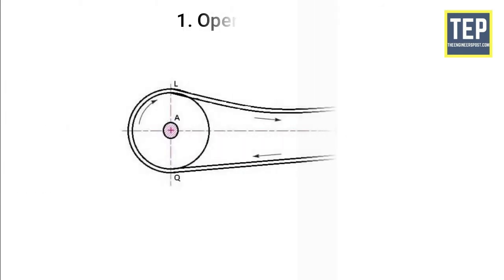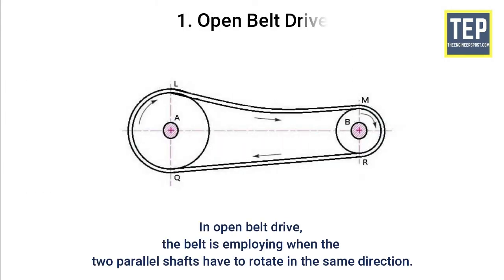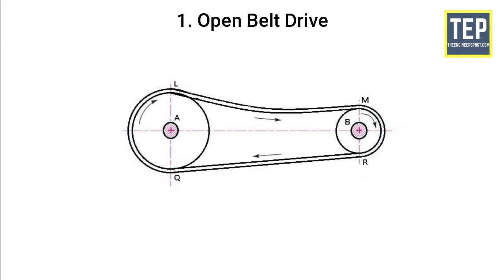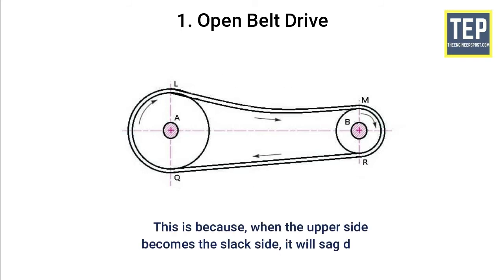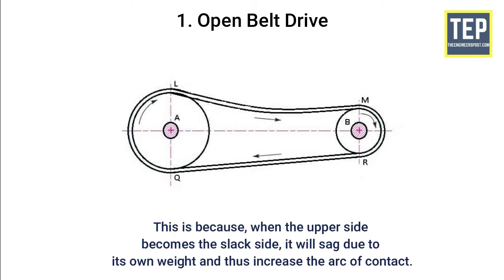In an open belt drive, the belt is employed when two parallel shafts have to rotate in the same direction. When the shafts are far apart, the lower side of the belt should be the tight side and the upper side must be the slack side. This is because when the upper side becomes the slack side, it will sag due to its own weight and thus increase the arc of contact.